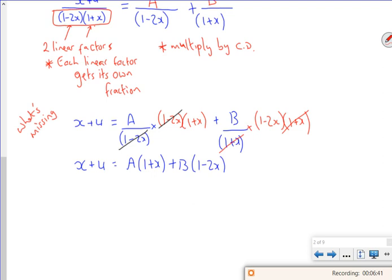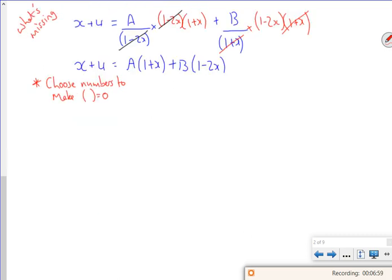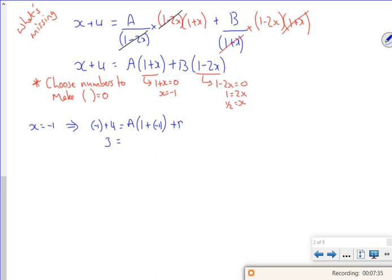So now what I need to do is choose numbers which make the brackets equal to 0. So if you look, it should be moderately straightforward with this one. So if I think that 1 plus x is 0, then I'm going to try x is minus 1. If I think that 1 minus 2x is 0, if I take the 2x over and then divide through, I've got x is a half. So I'm going to try x is minus 1. So it'll give me minus 1 plus 4, which is 3. And it'll give me A lots of 1 plus minus 1, so that bit disappears. Plus B lots of 1 minus 2 lots of minus 1, so I've got a 3 there. So I've got 3B. 1 is B.